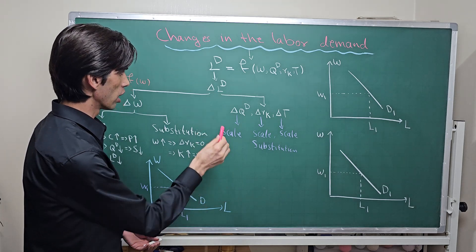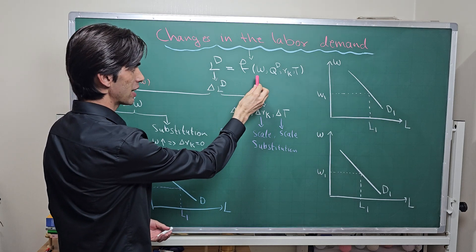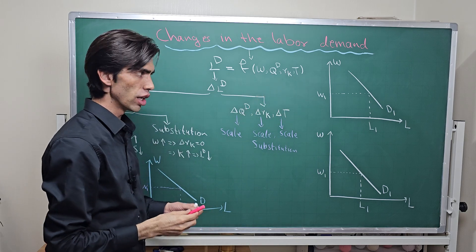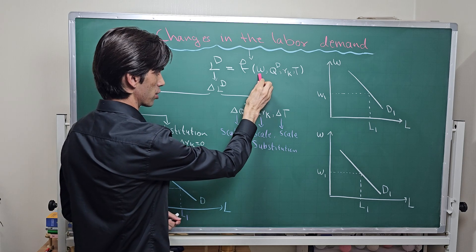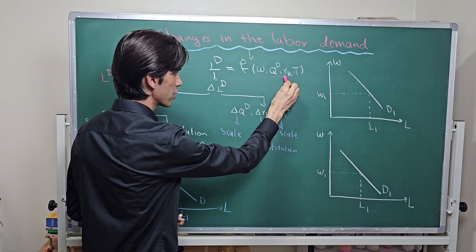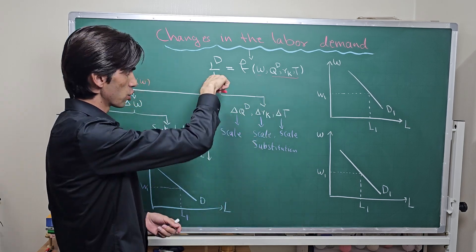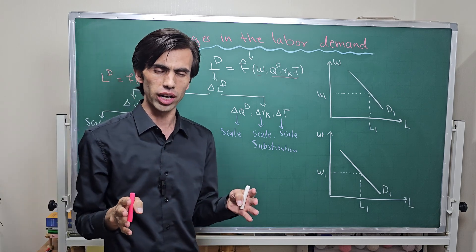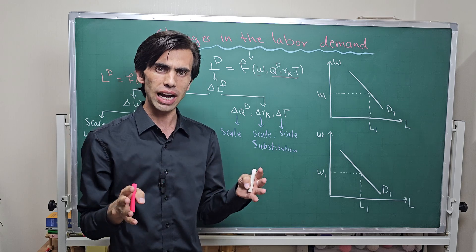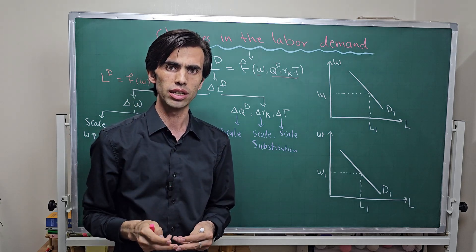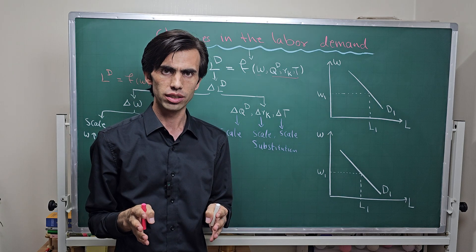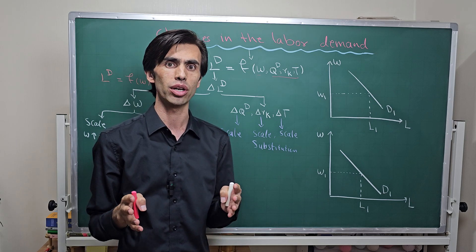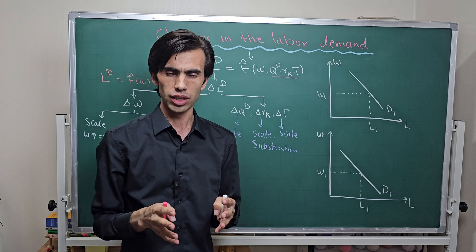Overall, labor demand is a function of wages and non-wage factors. So when one of these factors changes — either wages or non-wage factors — the labor demand will change. If we divide all the factors into two main categories: wage determinants of labor demand and non-wage determinants of labor demand.